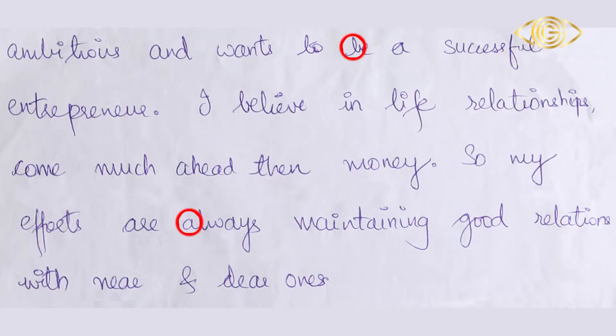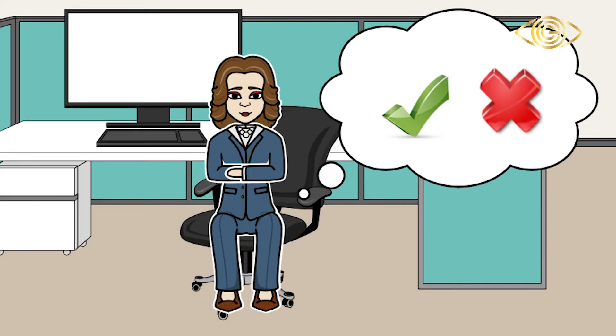This writer leans slightly to the left rather than to the right — making this more of an 'A slant' writer — which shows the person is very practical when it comes to decision-making and the head rules the heart. But since the writer also has a large handwriting size and likes to be with people around, we considered this candidate to be highly potential when it came to being a leader in the organization.